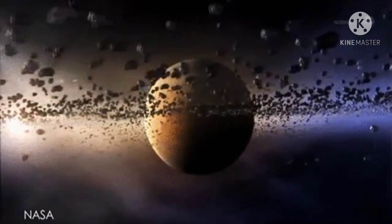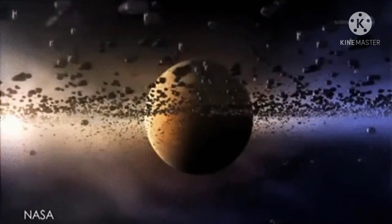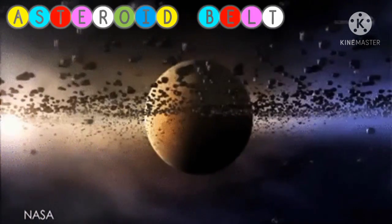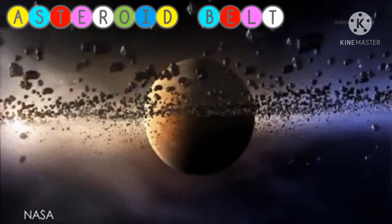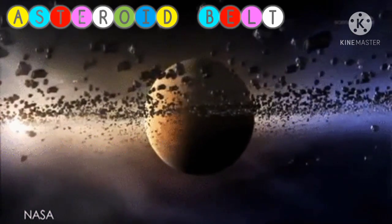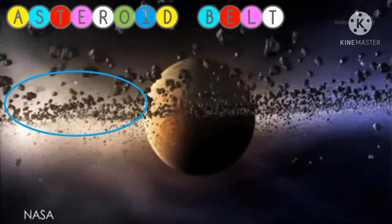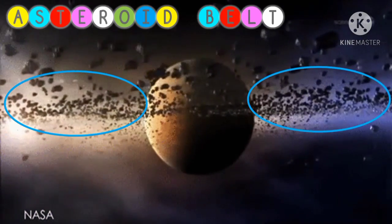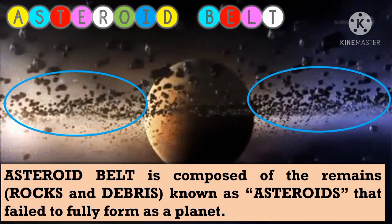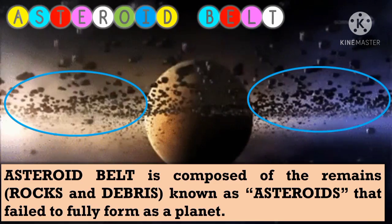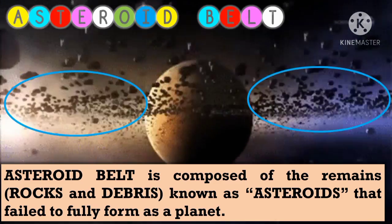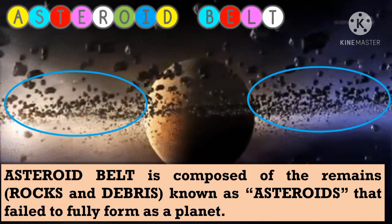Before we go to the outer planets, we will pass through the asteroid belt first. It is the region of space between the orbits of Mars and Jupiter. The asteroid belt is composed of the remains of rocks and debris known as asteroids that failed to fully form as a planet.